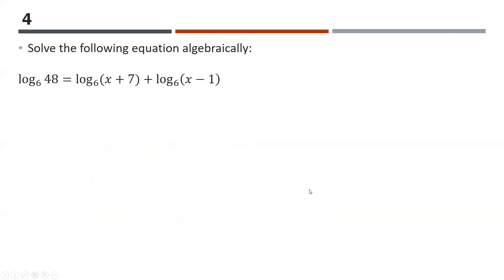Question four: solve the following logarithmic equation algebraically, where you have a log equal to a log. First, I want to write each side as a single log. The left side is already fine. On the right side, we're adding two logs with the same base, so we multiply the inputs: log base 6 of 48 equals log base 6 of (x+7)(x−1).